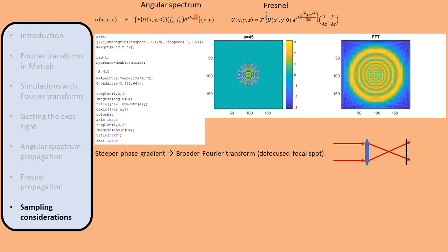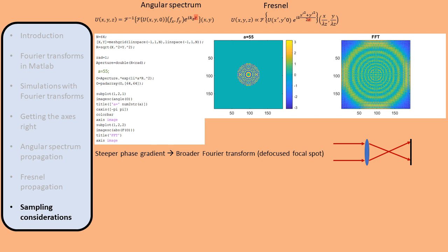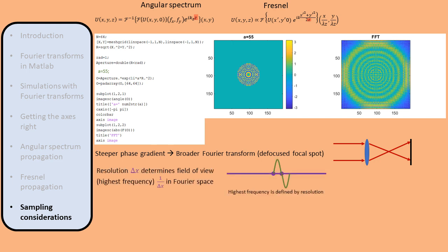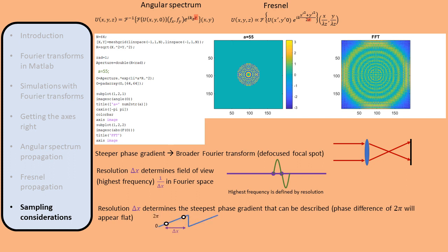Physically, what we are simulating is the focal spot of a thin lens as it goes out of focus. The stronger the quadratic phase factor, the farther we go out of focus and the larger the focal spot becomes. At some point, the focal spot becomes so large that it fills the entire field of view. Recall that the field of view in Fourier space is determined by the resolution in object space.